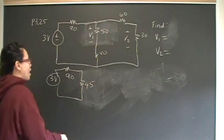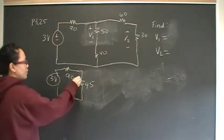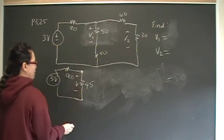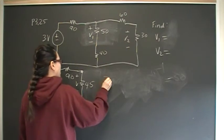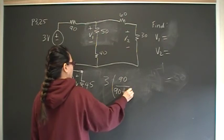So now I have a series circuit, right? 90 in series with 45. I can use voltage division to find the parallel voltage across here, that voltage drop. I need that. So I'm going to go 3 times 90 over 90 plus 45.